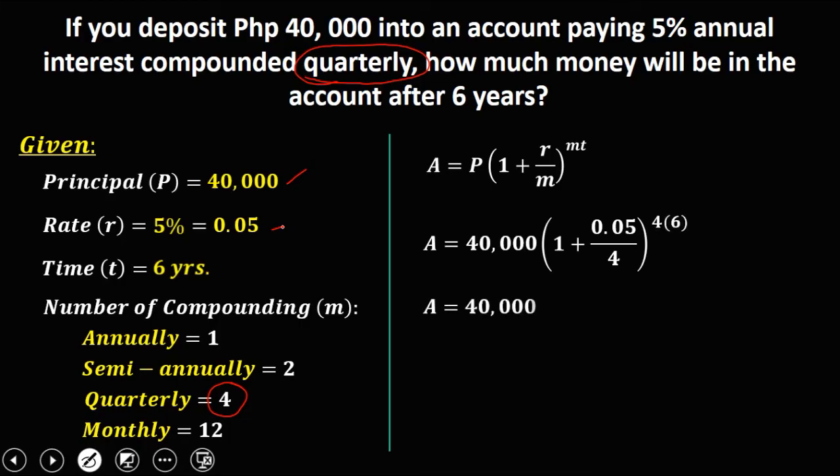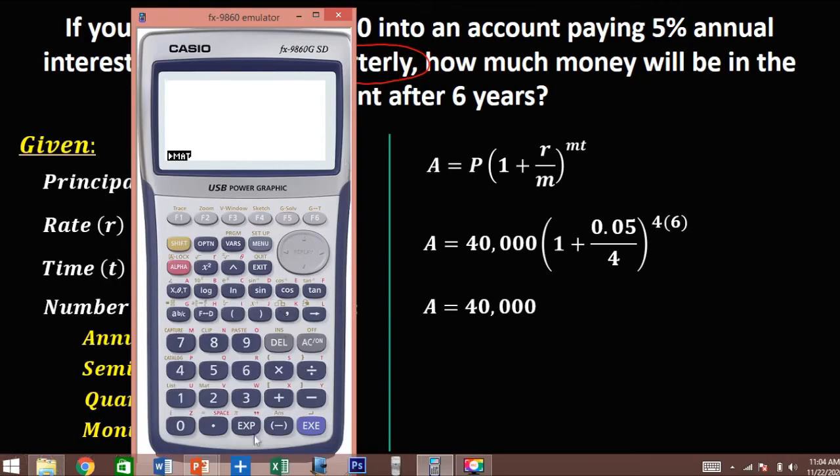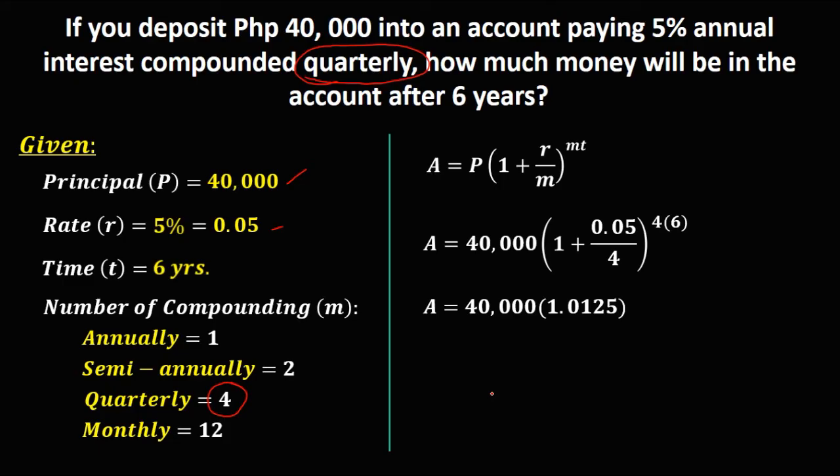Then simplify. So we have 0.05 divided by 4 equals 10 plus 1, that's 1.0125. And this 4 times 6, that's 24.